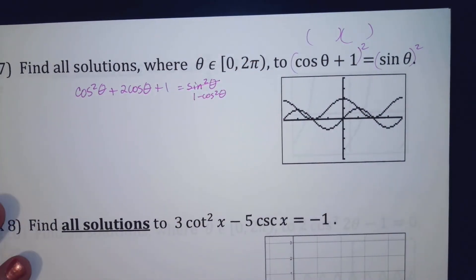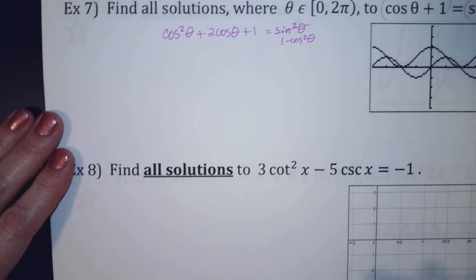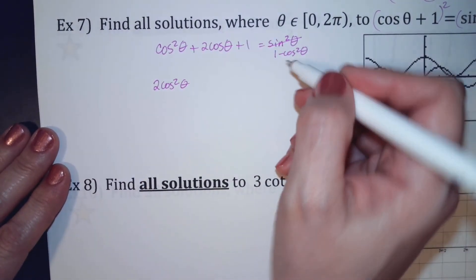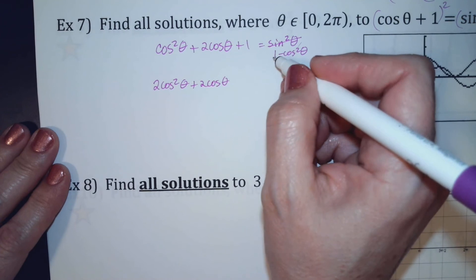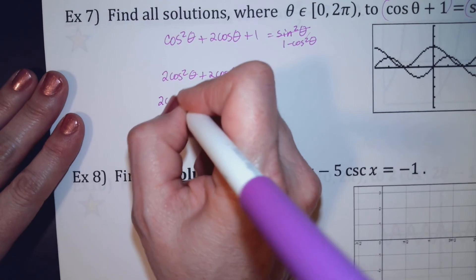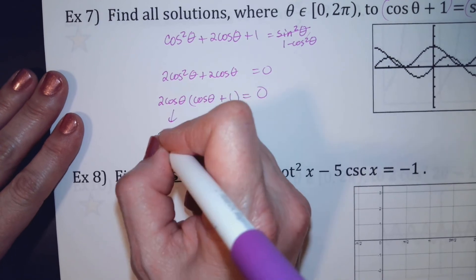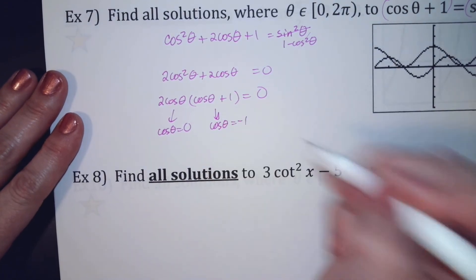This is what the identities were getting you ready for — not just solving identities in isolation, but using them in solving equations. Combining like terms: I bring the cosine squared over, leaving 2 cosine squared plus 2 cosine, and the 1s cancel out. Factoring: I take out a 2 and a cosine, leaving cosine plus 1. So cosine equals 0, and from the other factor cosine equals negative 1.